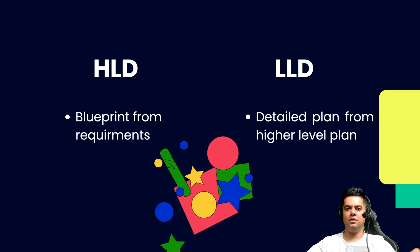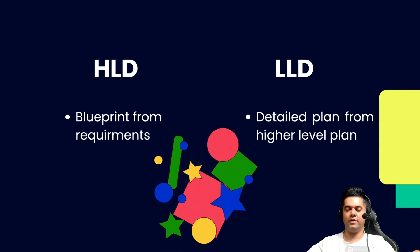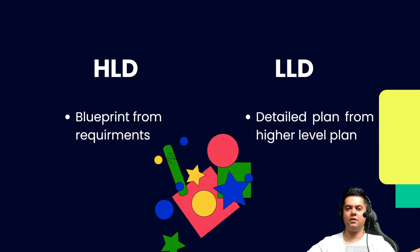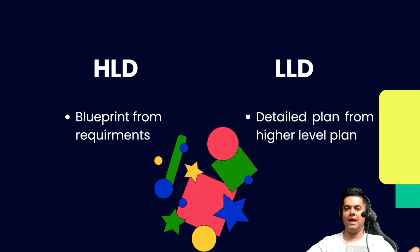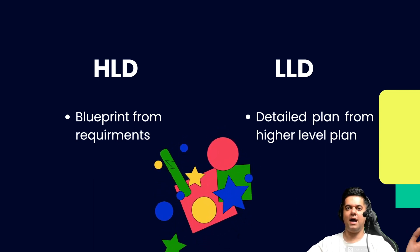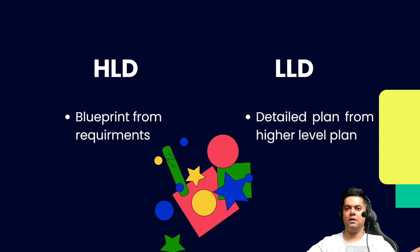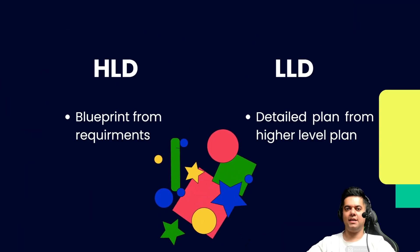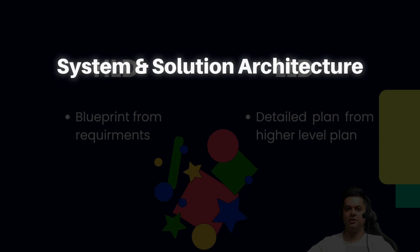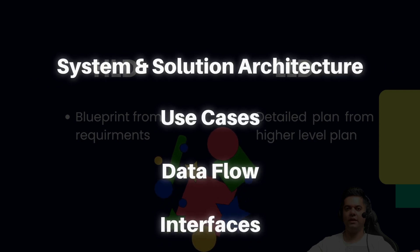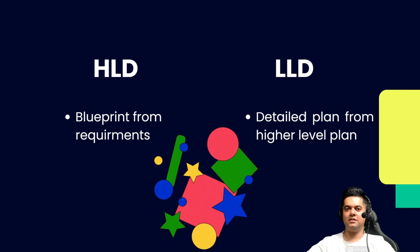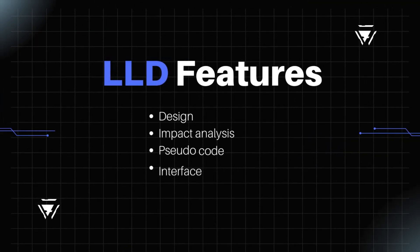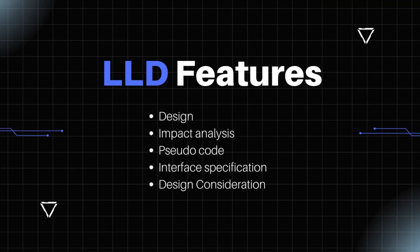To conclude: based on the requirements of the software, the HLD is designed, and it essentially acts as a blueprint for how the system will be built. LLD is the conversion of a higher level design into a detailed plan for how the solution will be built. HLD contains the system and solutions architecture, use cases, data flow, and interfaces, while LLD contains feature design, impact analysis, pseudocode, interface specifications, and design considerations.